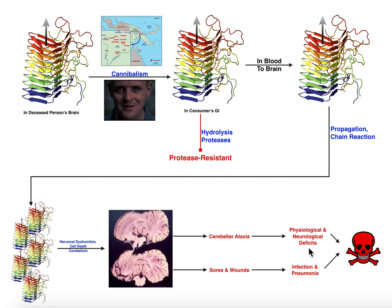These neurological deficits alone are not usually what kill the individual. Later in the progression of the disease — which takes less than a year to kill the person — they develop extreme sores and wounds all over their body. The actual cause of death is really infection and pneumonia as a result of these open sores and wounds. In Papua New Guinea where this originated, the lack of good medical care meant people with these sores and wounds would die of some secondary illness, not the Kuru itself.